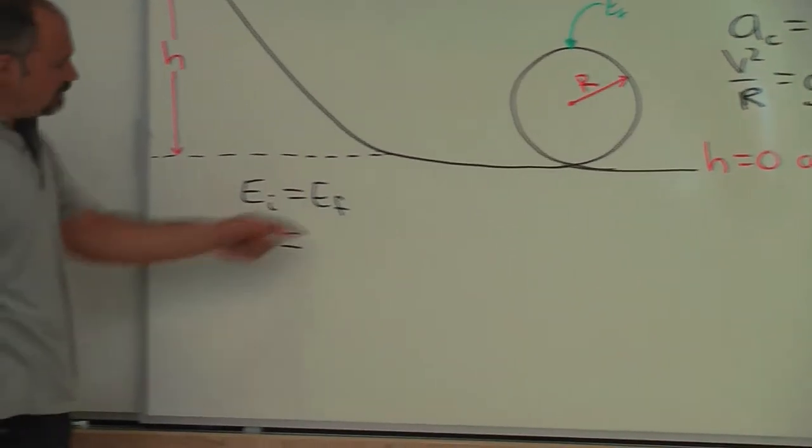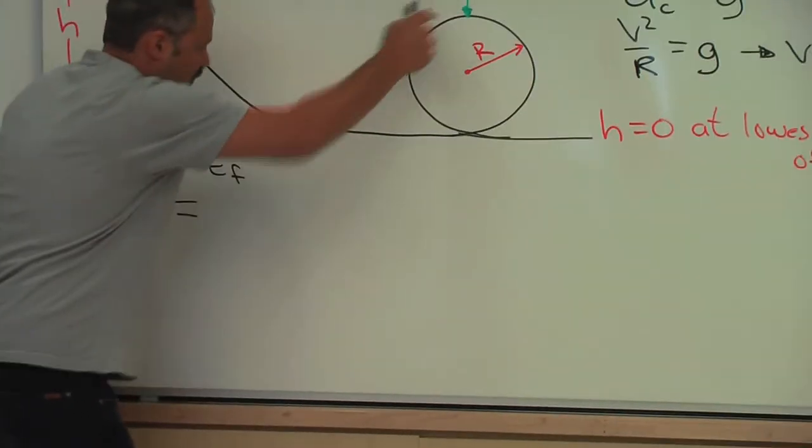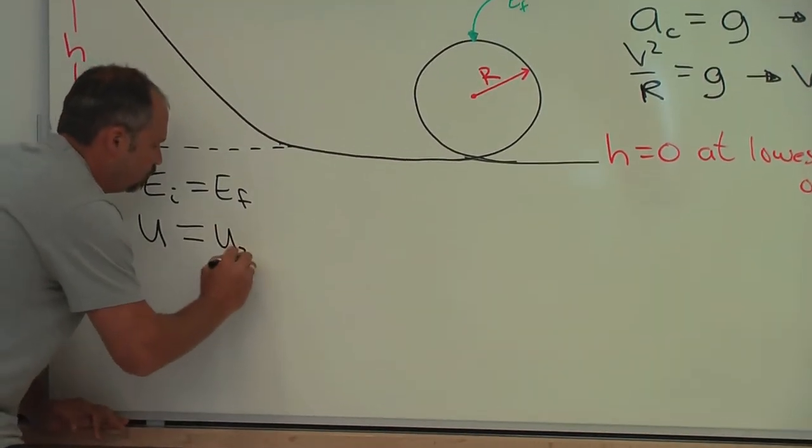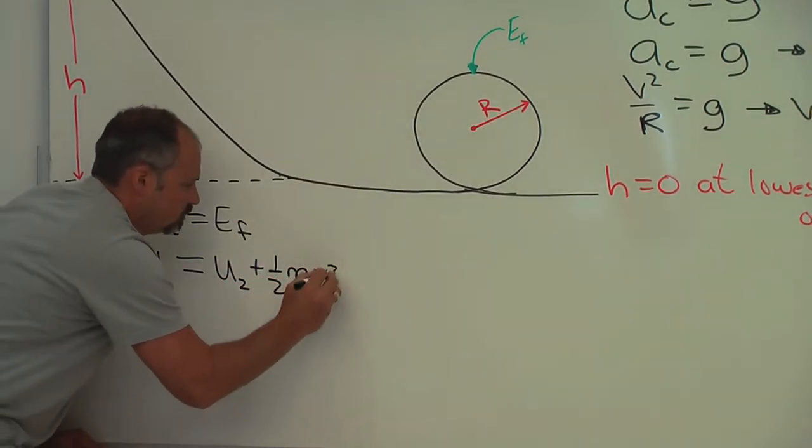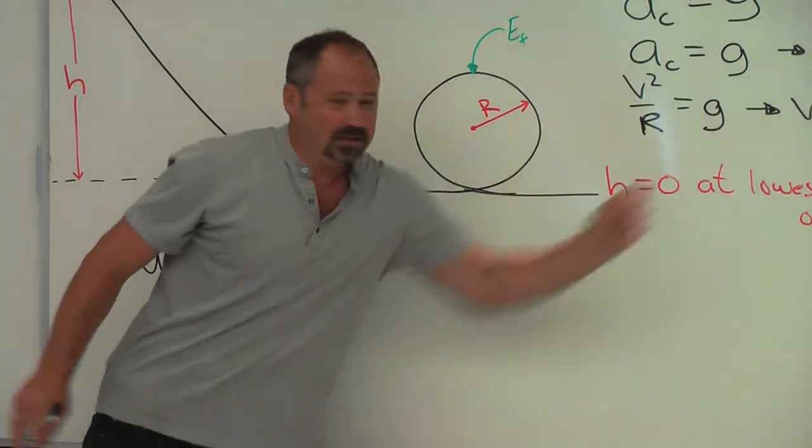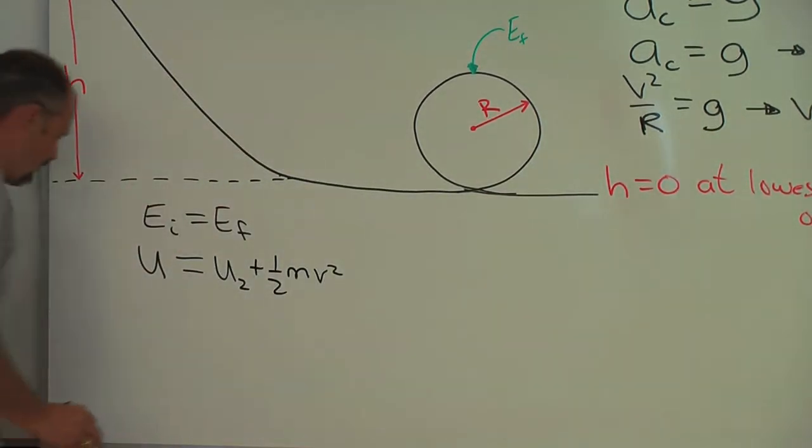Let's continue over here. So in the final state, we have potential energy U₂, but we also have kinetic energy ½mv², where this v has to be this, and we have kinetic energy of rotation ½Iω².